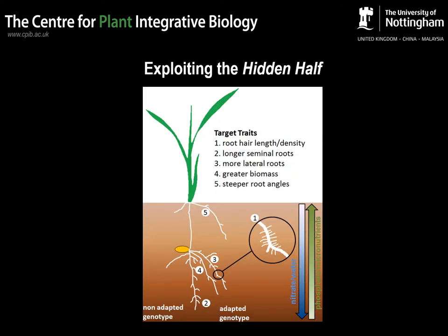So why is root phenotyping so important? To date, breeding programs have primarily focused on shoot traits to select crop varieties. However, we recognize the importance of root traits like depth, angle, and branching for resource capture efficiency. For example, rooting depth aids securing water particularly during drought, whilst root angle aids foraging for nutrients like phosphate which accumulates in the topsoil. And root branching density aids capture of nutrients like nitrate. Nevertheless, root phenotyping is very difficult given the practical challenges of imaging roots in their natural soil environment.